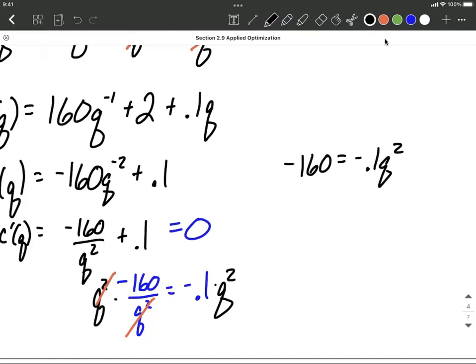My next goal is isolating that Q squared, so I'm going to divide by negative 0.1. That'll give us positive 1600 on the left-hand side equals Q squared on the right side. Multiplying and dividing by the same thing. I'm going to finish this up and get Q all by itself by taking the square root of both sides.